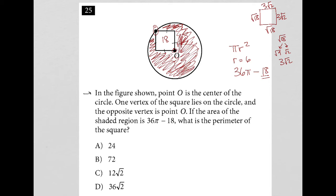So what's this question asking? If the area of the shaded region is 36π minus 18, what is the perimeter of the square? Okay, well, the perimeter of the square would just be 3√2, because that's one side of the square, times 4. I'm not sure why I did it to the left, but it still works. So because there's four sides, right, every side is this 3√2.